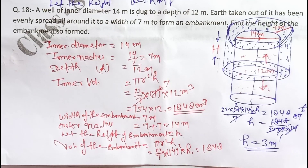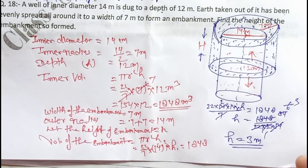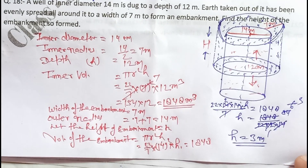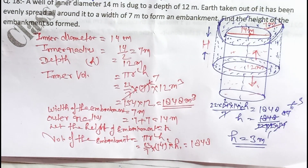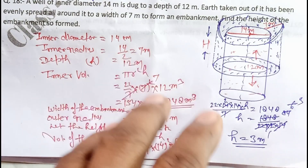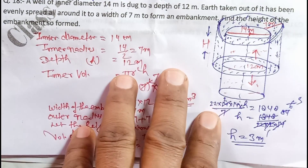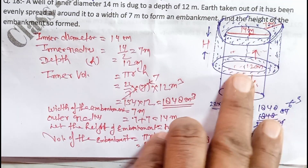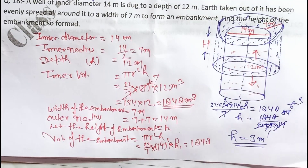So the height of this embankment will be 3 meters. I hope you understood the question very well. You must also try to solve it yourself — there are many such questions, do attempt them and always make a diagram. Now let's do question number 19.